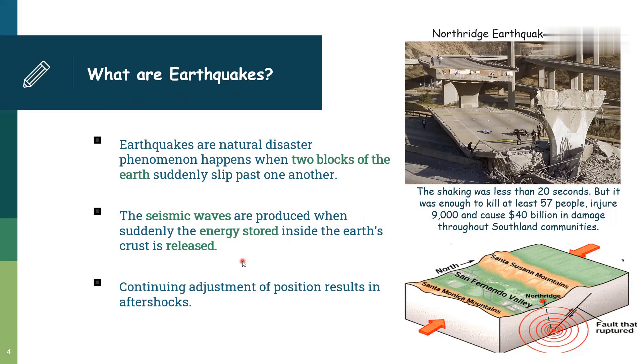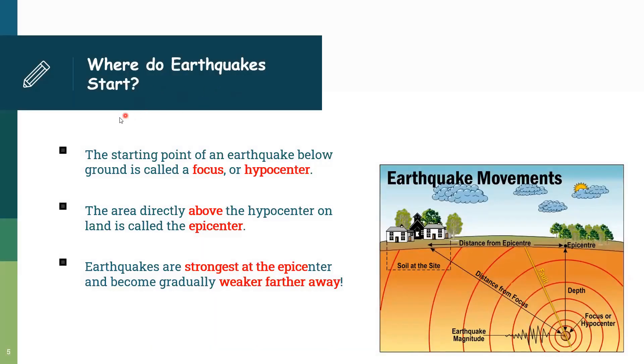So where do earthquakes start? The starting point of earthquake is below the ground. It's called focus or hypocenter. The area directly above the hypocenter is called epicenter. The distance between the epicenter and the site location is called epicentral distance. So the seismic waves propagate in different directions and the earthquakes are strongest at the epicentral zone and become gradually weaker farther away from the epicenter.